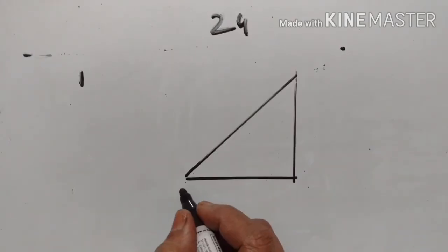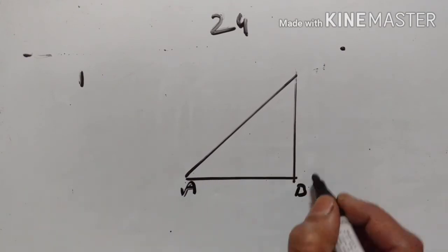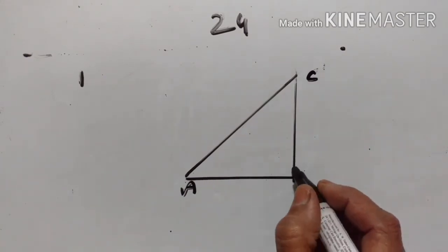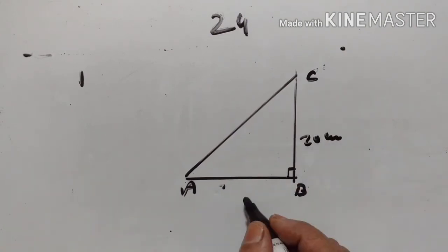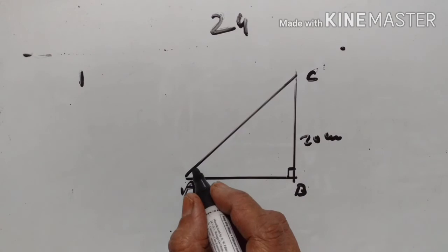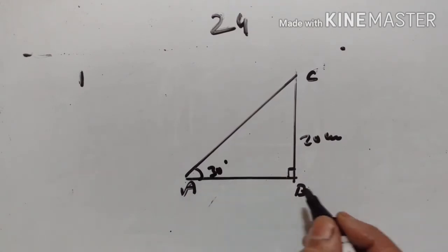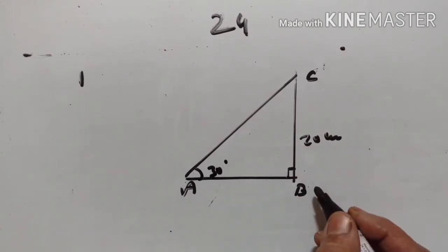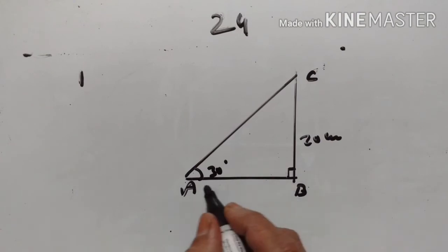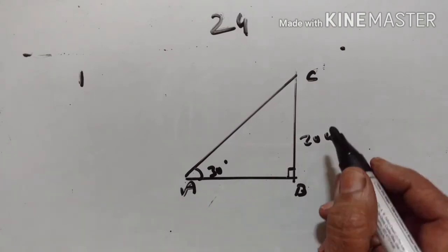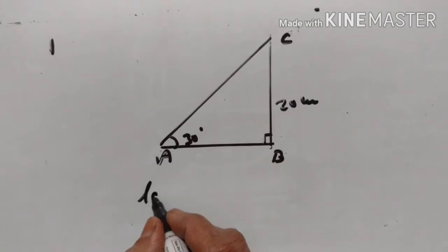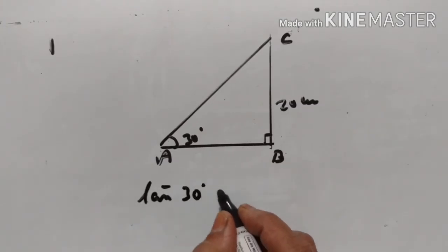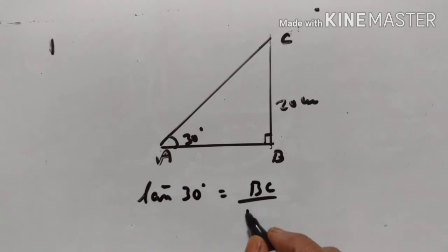Let's go to the example sum. In triangle ABC, right angle at B, BC is equal to 20 cm, angle A is equal to 30°. Find the length of AB. BC is given and AB we have to find. Tan 30° is equal to BC upon AB.